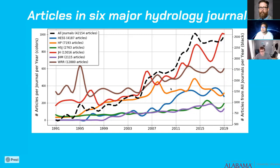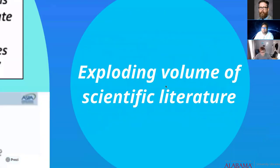Just by the sheer numbers of these six journals, there are about 42,154 articles published between 1991 and 2019. If someone wants to get into this field or synthesize the data, it is a nightmare. Ideally, we want to make use of all this textual data, but we also want to do it faster and in a way that is interactive and comprehensible to everyone.